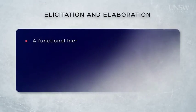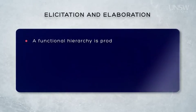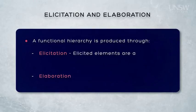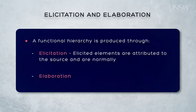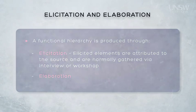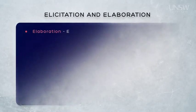Elicited elements are able to be directly attributed to the source and are normally gathered by interview or workshop. An elicited element could also be drawn directly from other constraints, such as a regulation for example. That means elicited elements are explicit — they are largely given to us directly by the business or the stakeholders, or taken directly from some constraint.